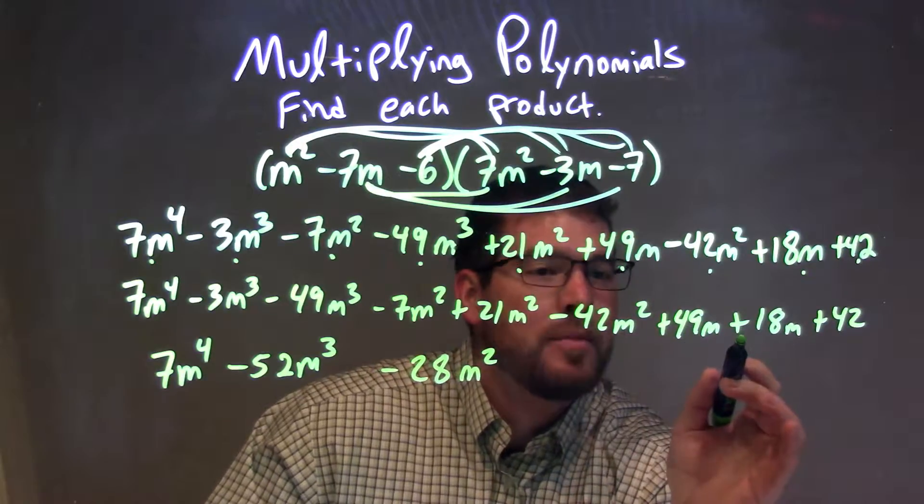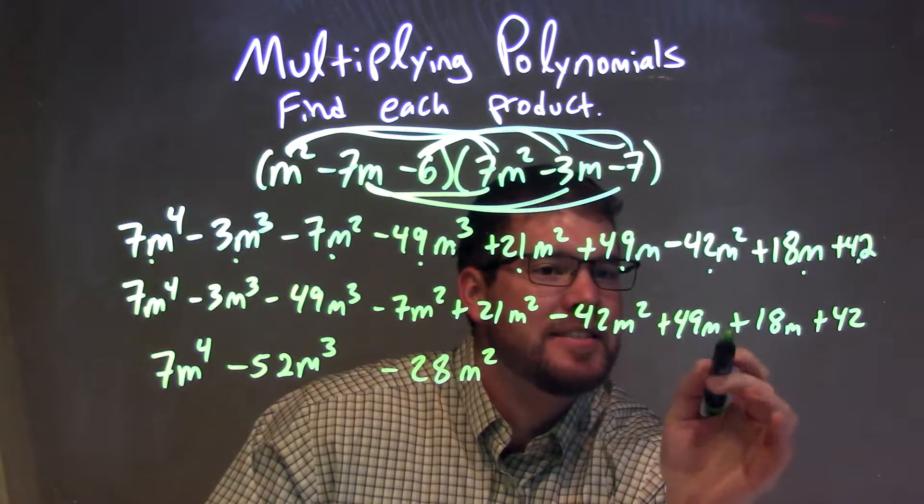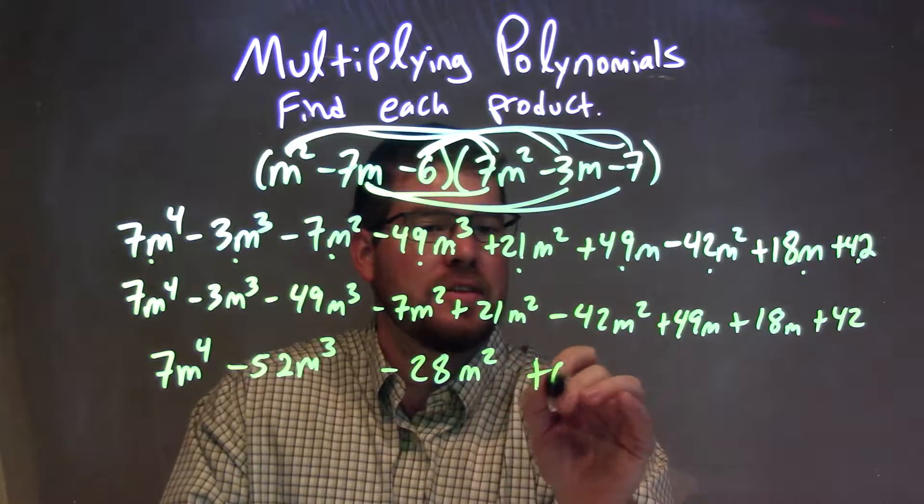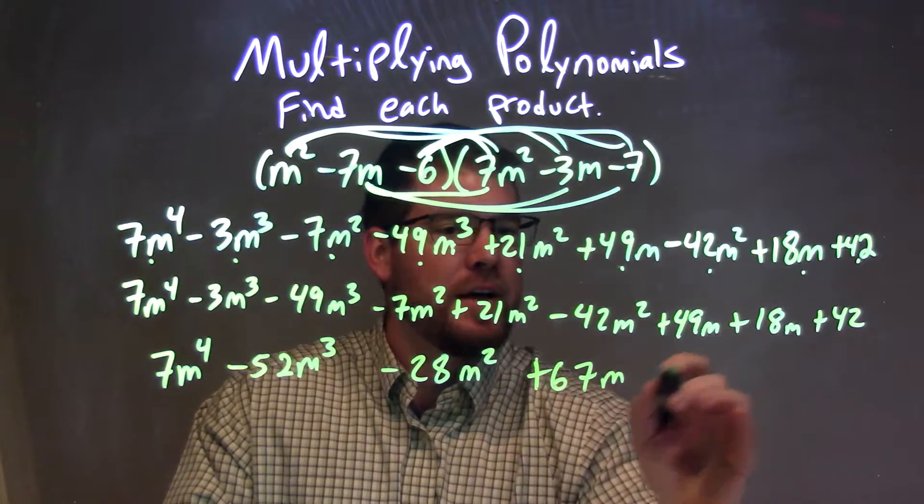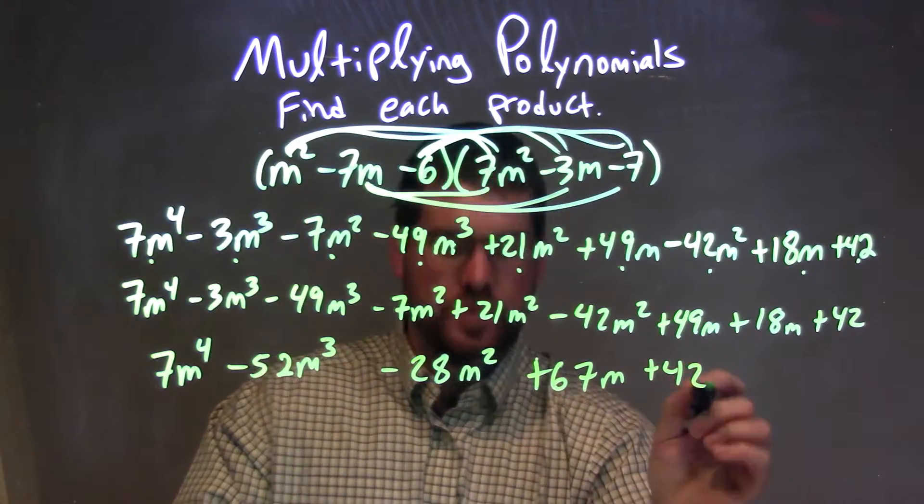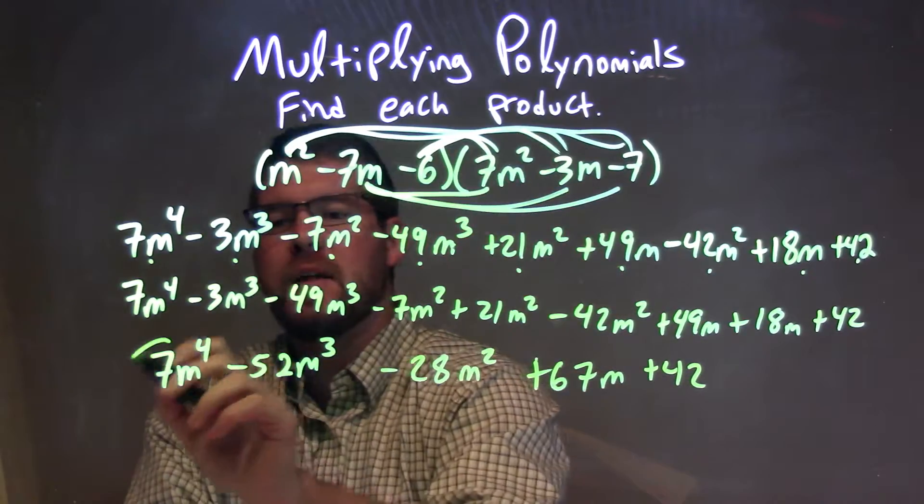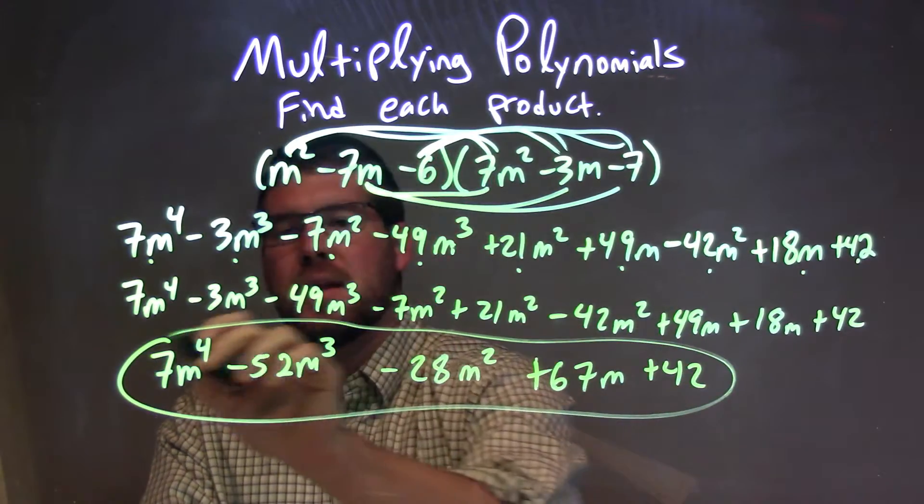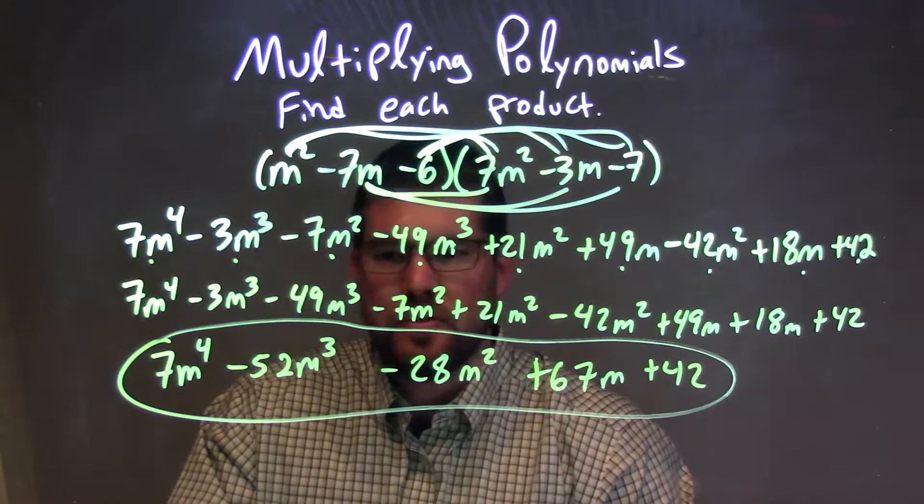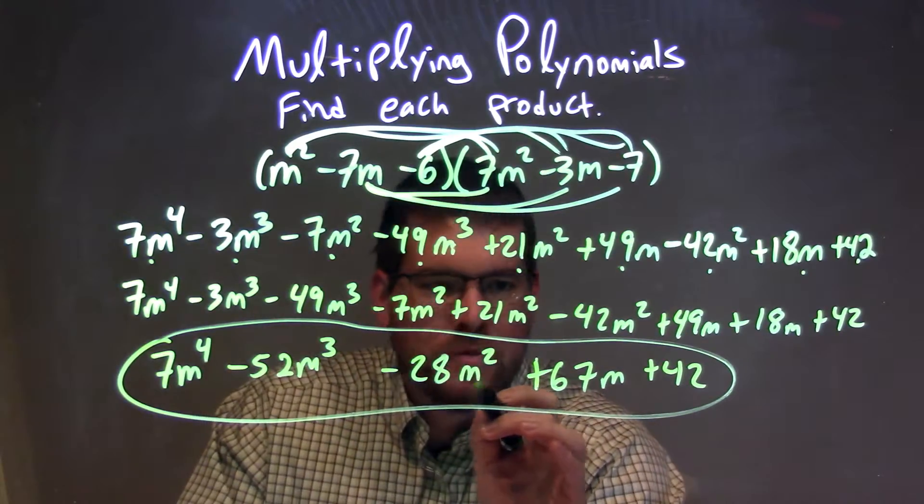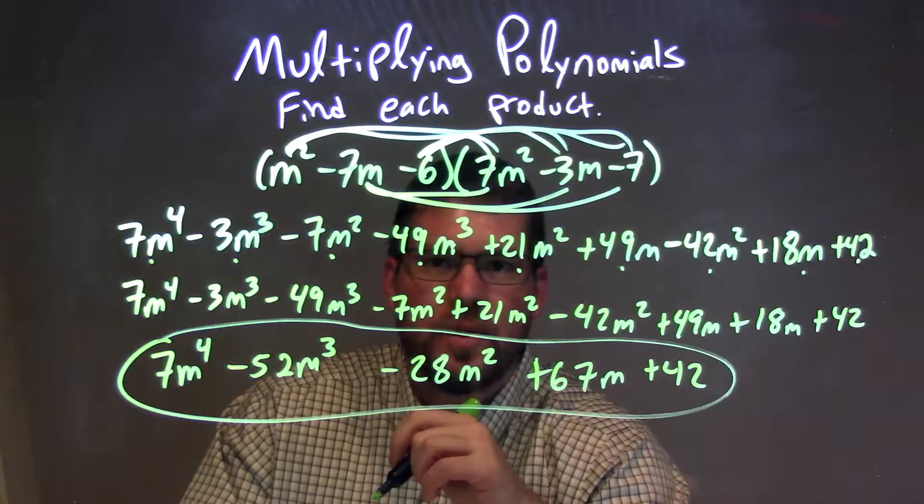49 plus 18 comes out to be 67m, so we have plus 67m, and lastly just the 42. Finished correctly, yes, great. So our final answer here is 7m to the fourth minus 52m to the third minus 28m squared plus 67m plus 42.